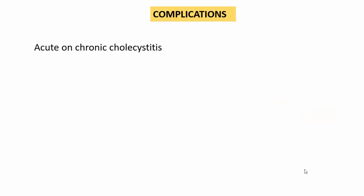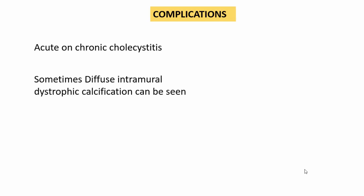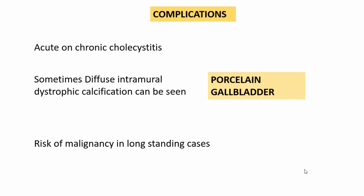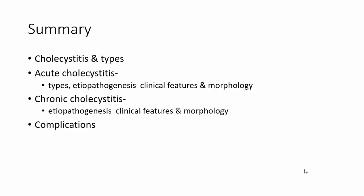Complications of chronic cholecystitis include acute inflammation superadded over chronic inflammation, termed acute and chronic cholecystitis. Diffuse intramural dystrophic calcification within the gallbladder wall is referred to as porcelain gallbladder. There is always a risk of malignancy in long-standing cases, resulting in development of gallbladder carcinoma. In summary, we discussed the various types of cholecystitis and the etiopathogenesis, clinical features, morphology, and complications of acute and chronic cholecystitis.